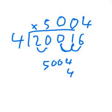4 times 4, 16. 4 times 0, 0. 4 times the other 0, 0. Then, we do 1, 2, 3. 4 times 5 is 20.